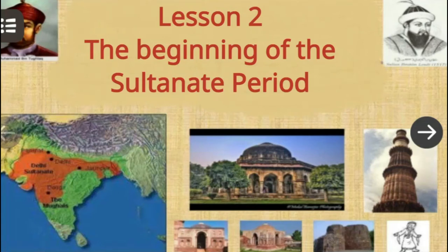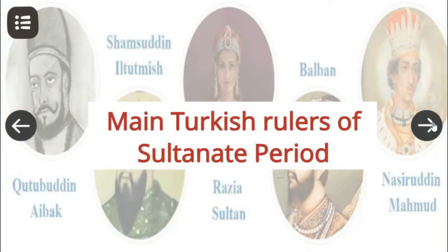Hello children. In this lesson we shall discuss how the foundation of the Sultanate dynasty was laid. After the death of Muhammad Gori, a very capable slave officer Qutbuddin Aibak became the ruler of Delhi. Do you know that in the time of Muhammad Gori, there was a trend of keeping slaves?